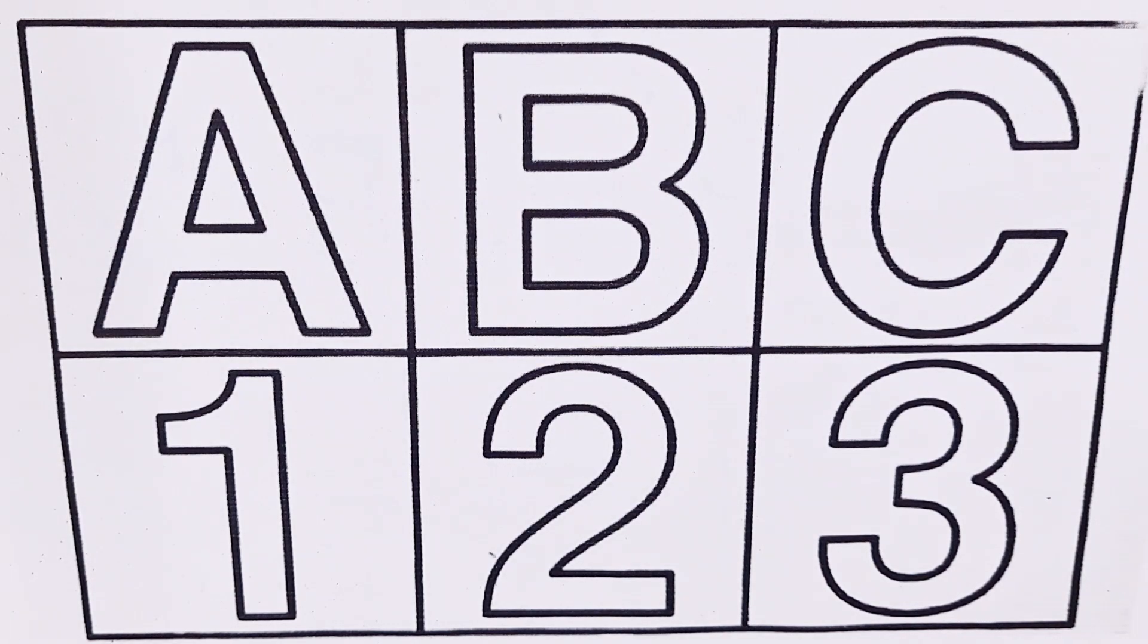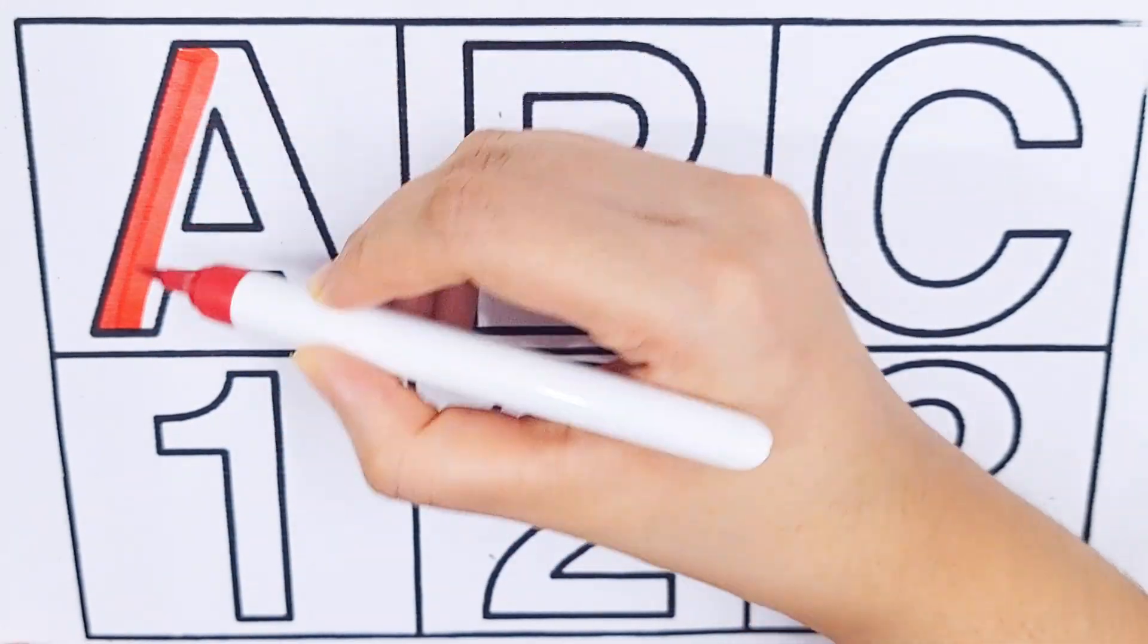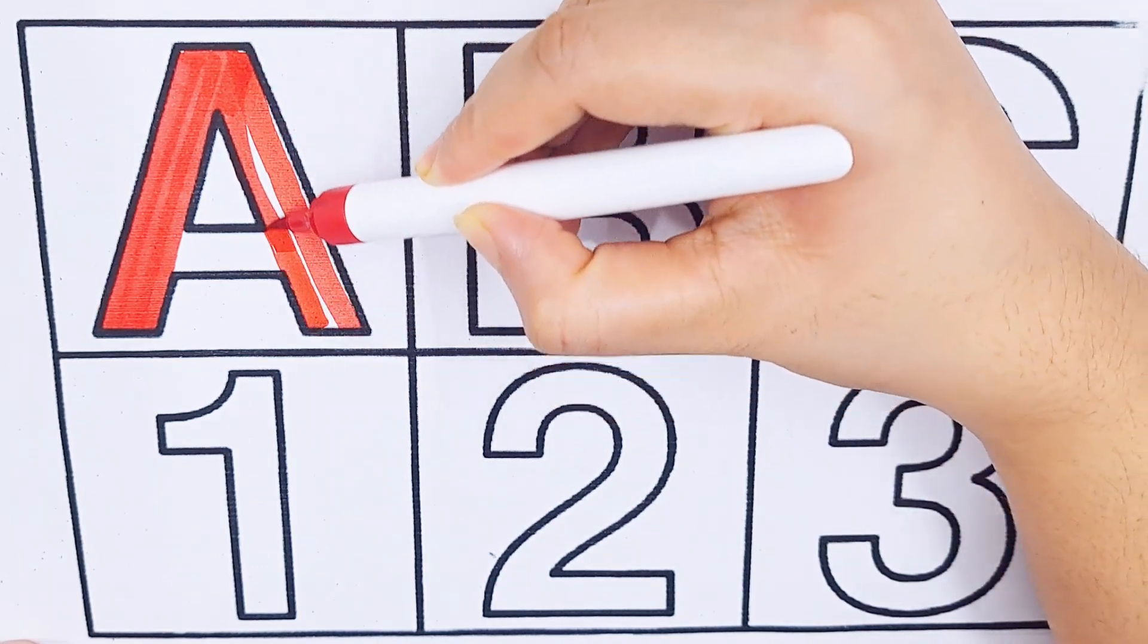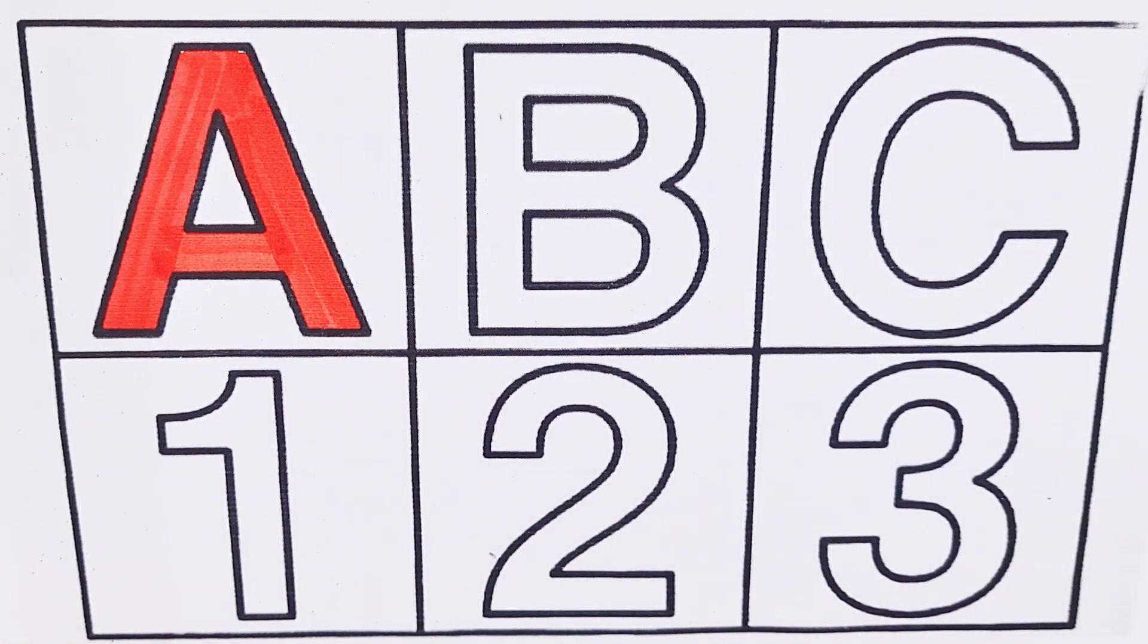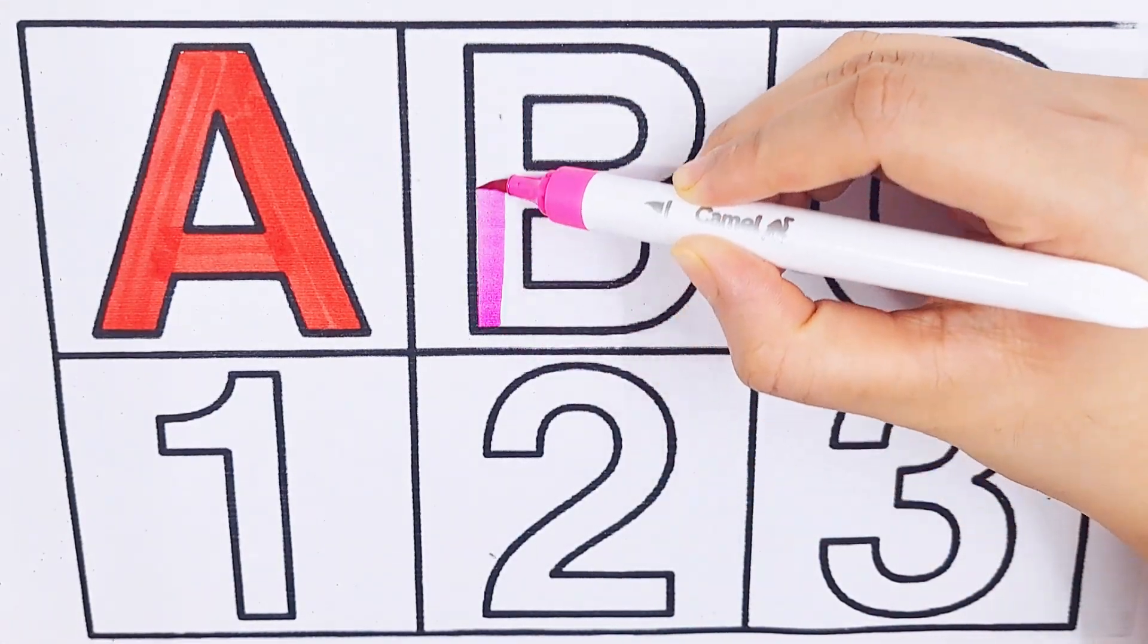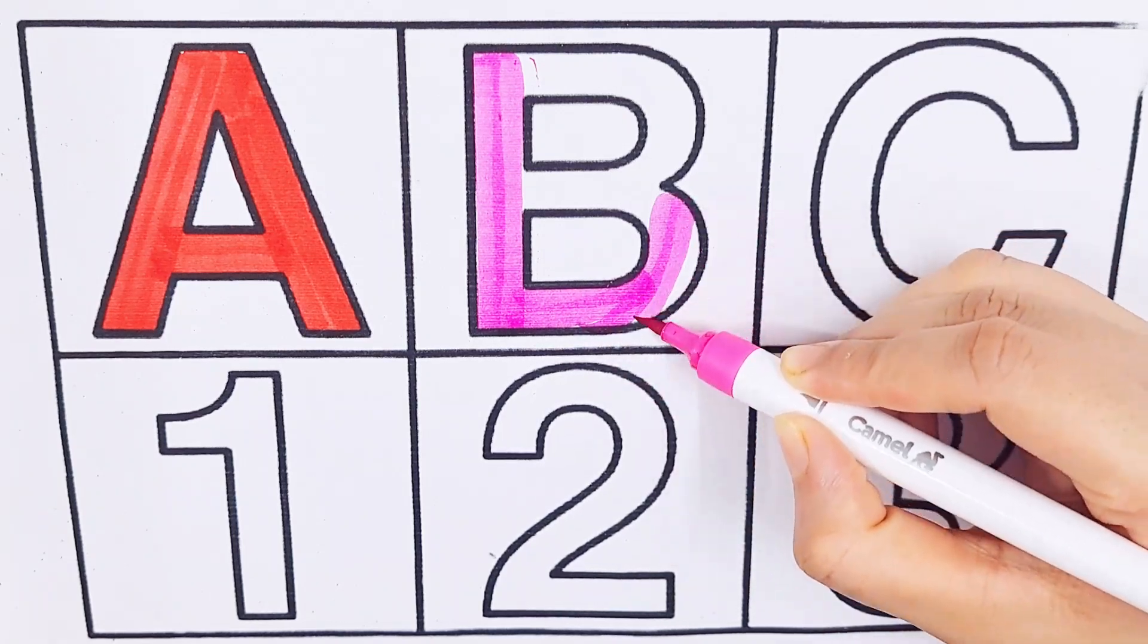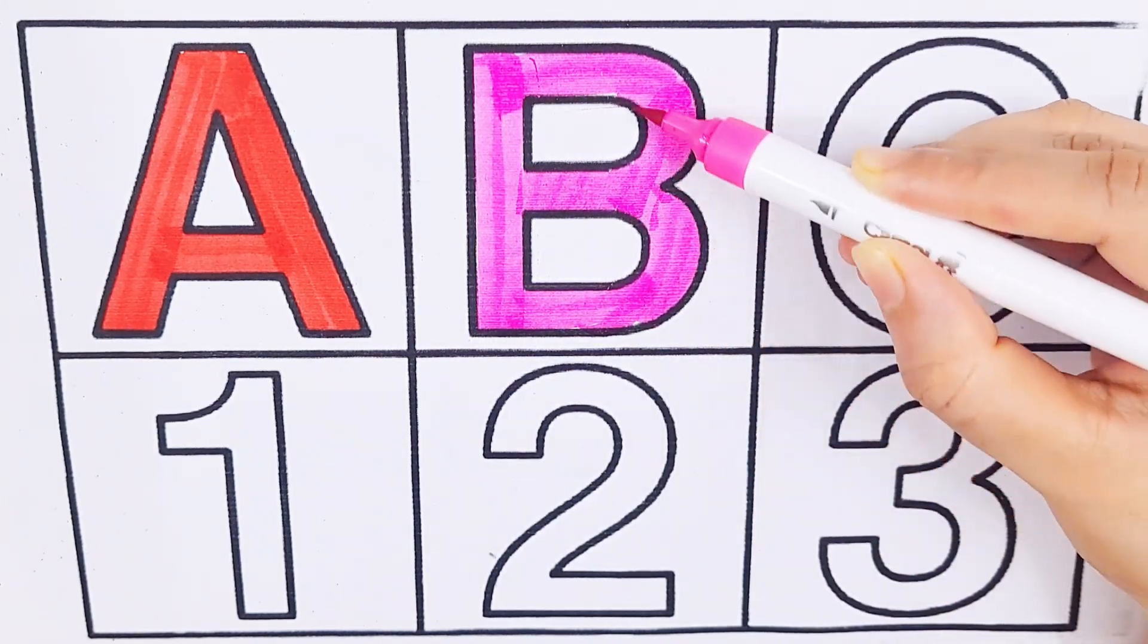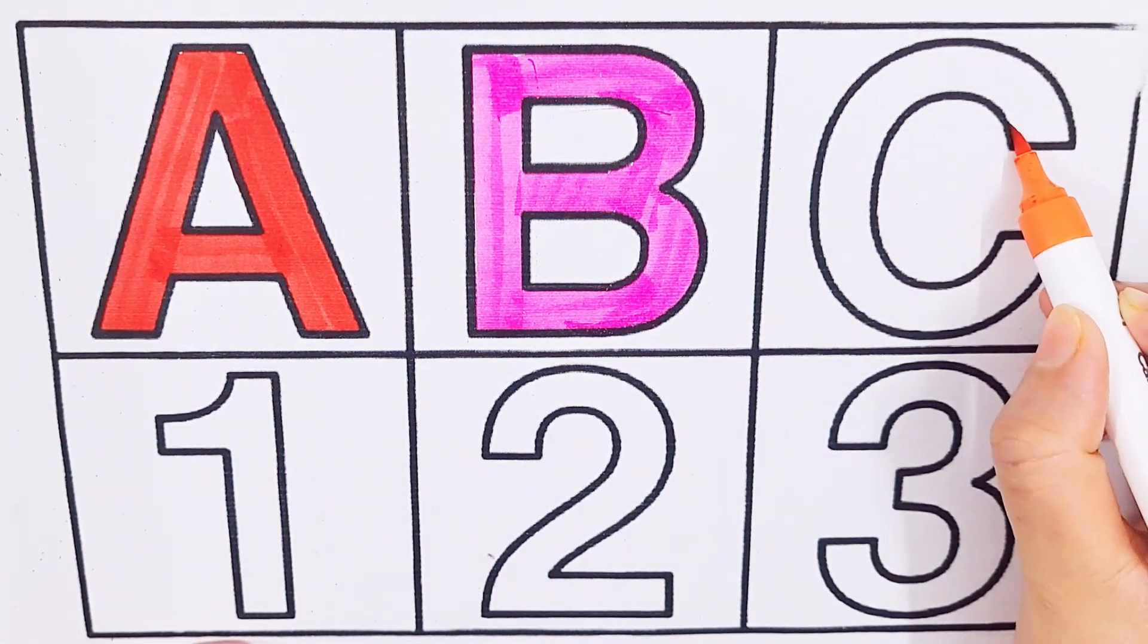Red color. A, A for apple. Purple color. B, B for ball. A, B, C, D, E, F, G, H, I, J. Color C, C for candy.